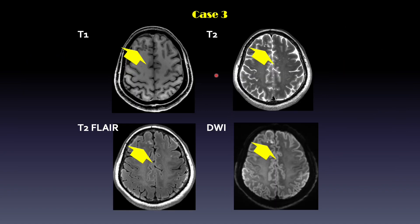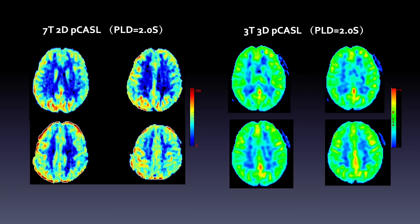Case 3 is a 55-year-old woman with probable dysembryoplastic neuroepithelial tumor. There is a nodular lesion in the right frontal region. The patient underwent ASL at both 3T and 7T. In this case, both field strengths showed hypoperfusion. However, at 7T you can see better delineation of the white matter and gray matter boundary, as well as the hypoperfusion lesion, which improved diagnostic confidence.